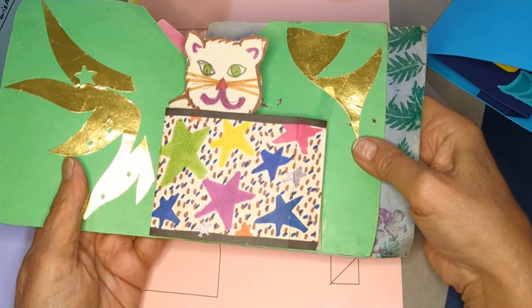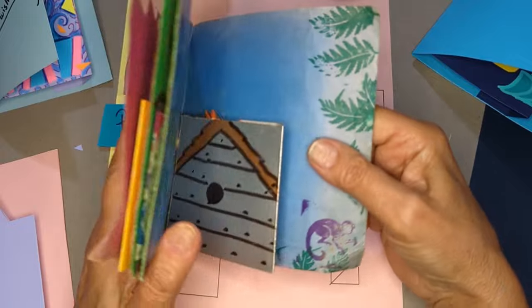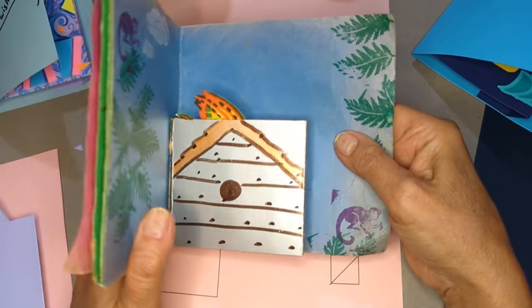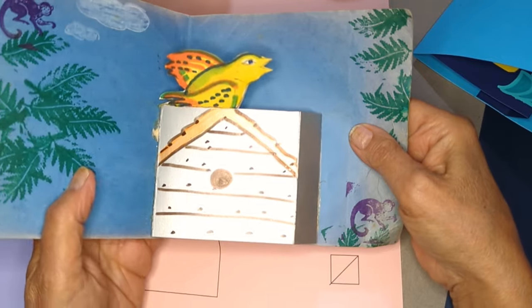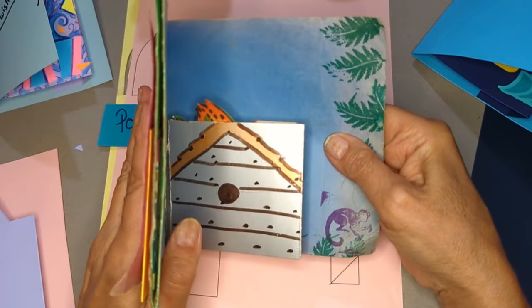So this is my model from 25 or 30 years ago and it still works. You can see what it does—it's got this little mechanism that makes something come up from hiding.